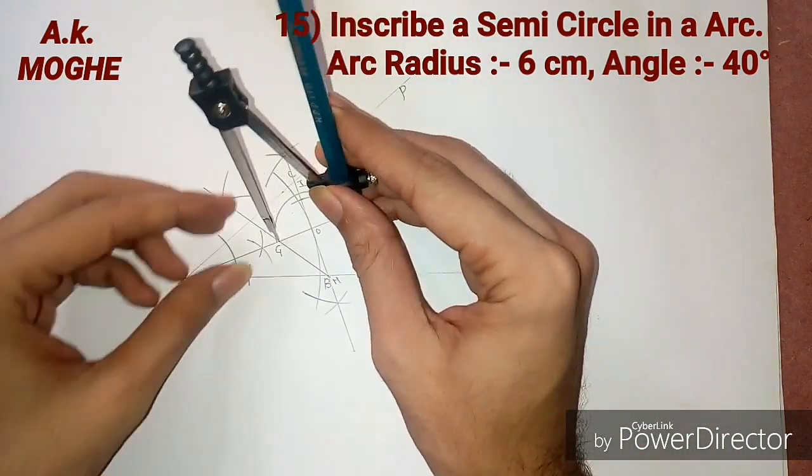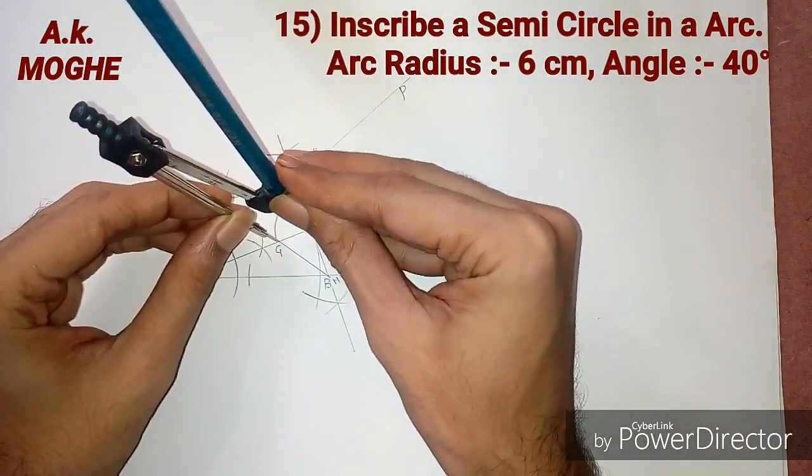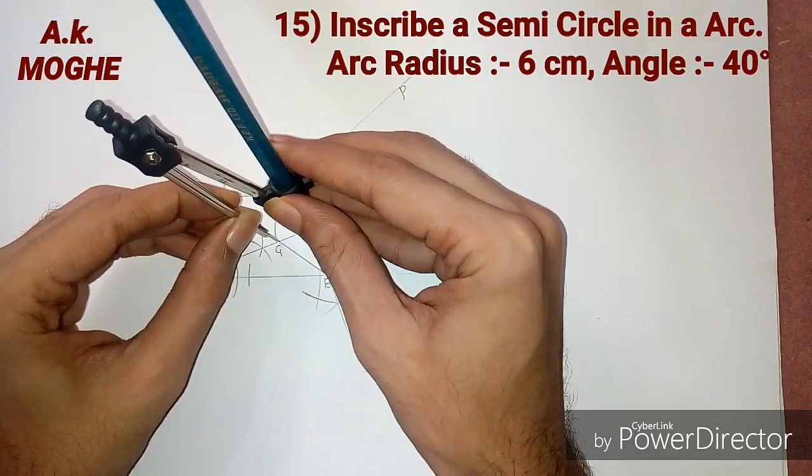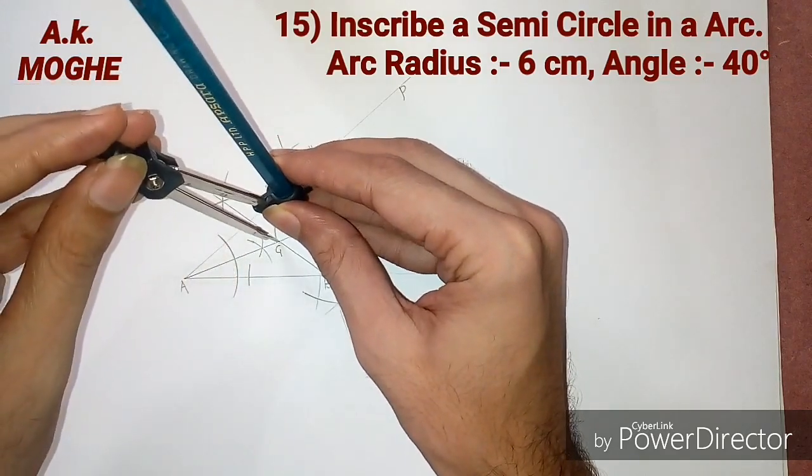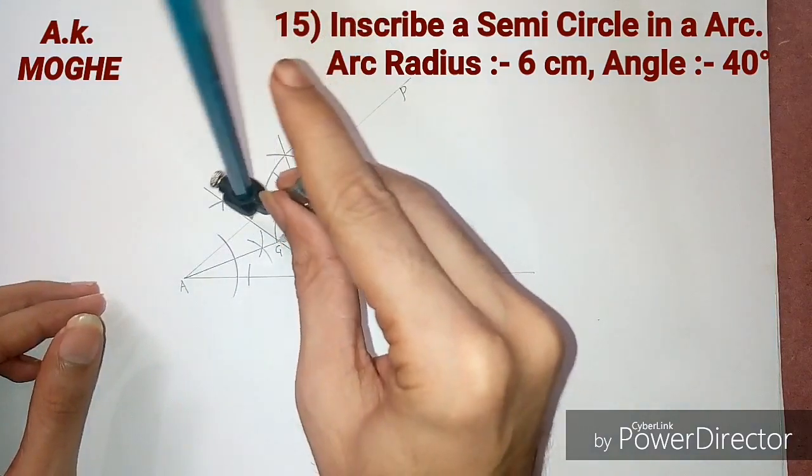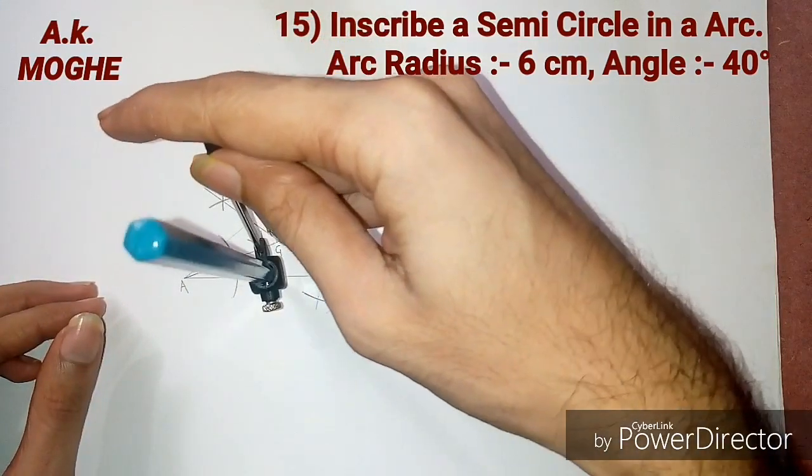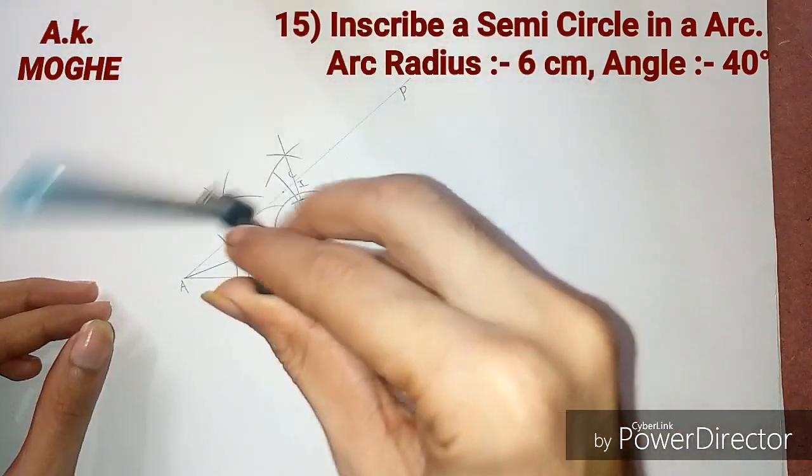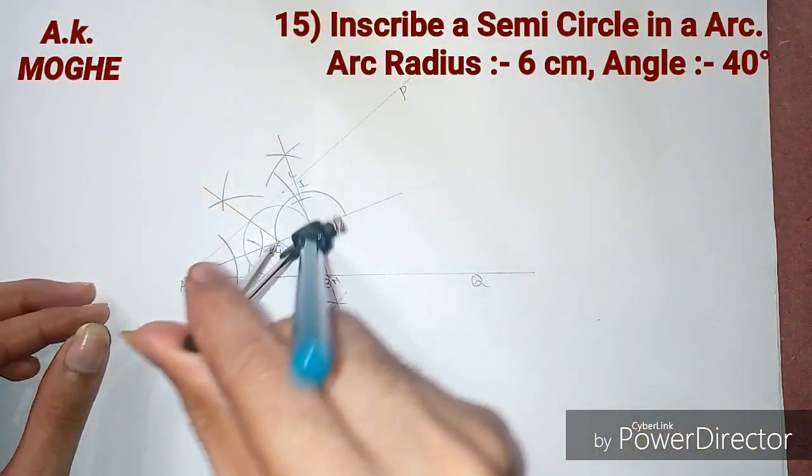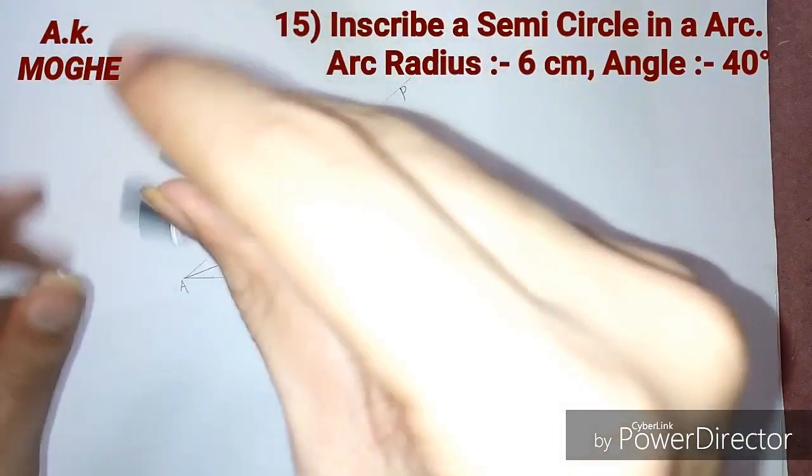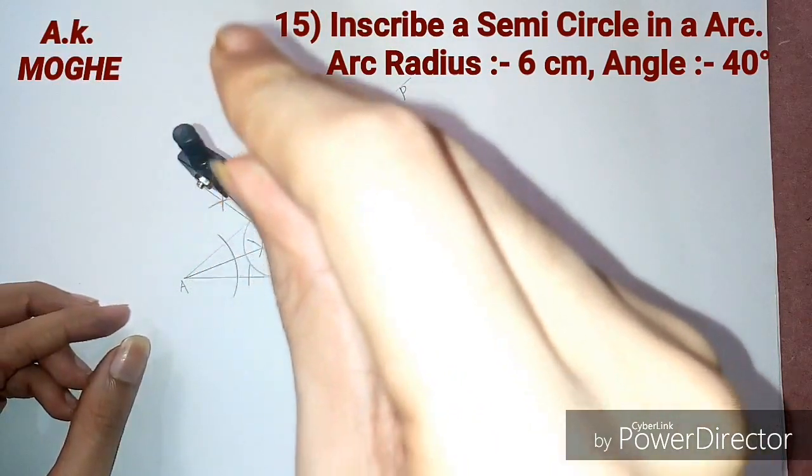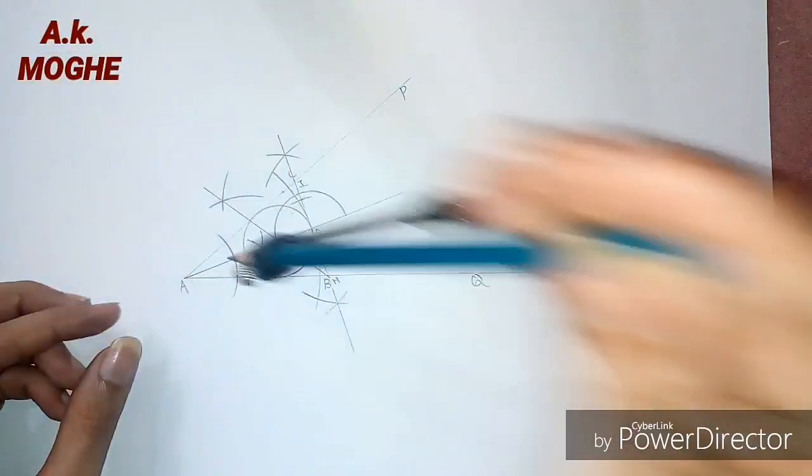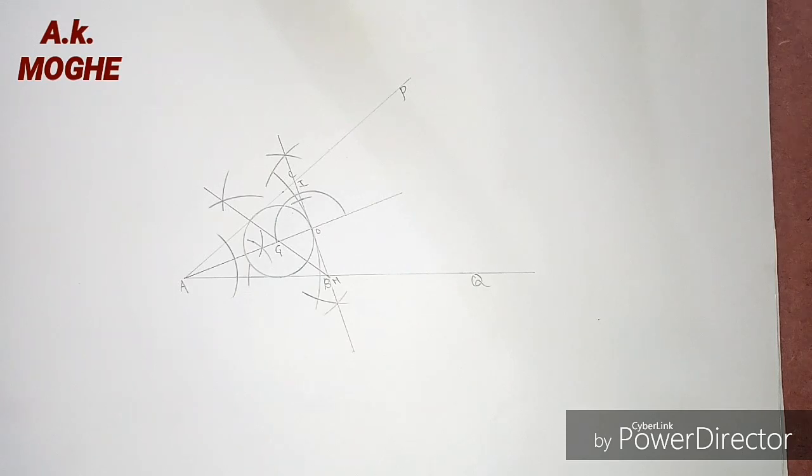From point G, we will take a radius equal to G to O and we will draw a circle.